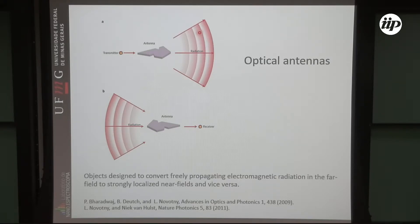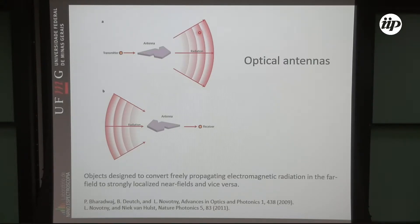In the usual theory of radiation that we learn from Jackson, for instance, you have sources emitting light, and you have the far field and the near field. Usually you never make an argument in terms of spatial frequency because it's not really a plane wave — you just have charges, and the reason why you don't reach the far field in the usual way is because the fields drop fast, more than one over r squared. When you calculate the Poynting vector, it goes to zero in the far field. So what am I missing — is there an exponential factor in the wave vector?